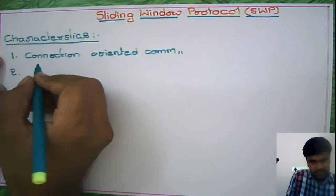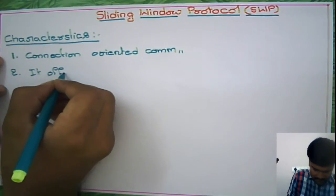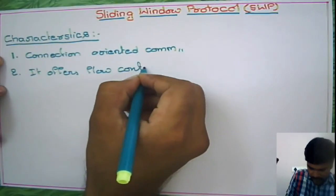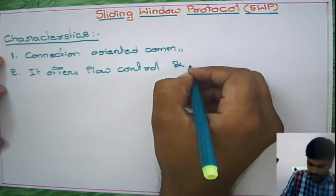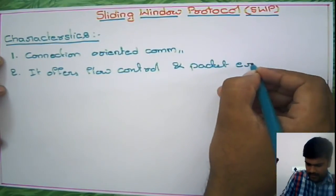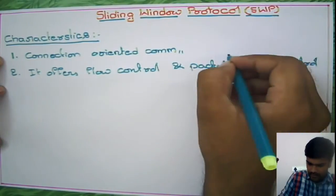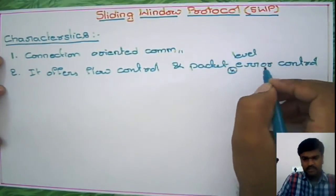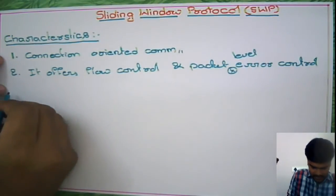The second characteristic is that, as we discussed, it offers flow control and packet-level error control. This will be clearer while discussing the actual SWP concept.